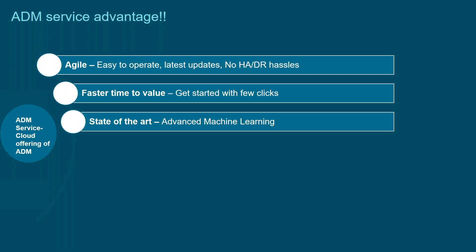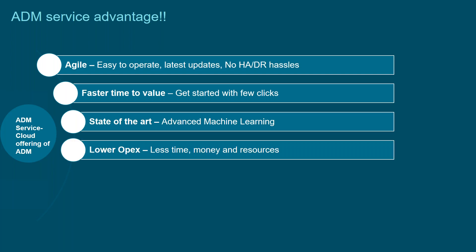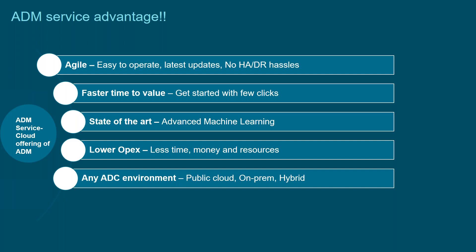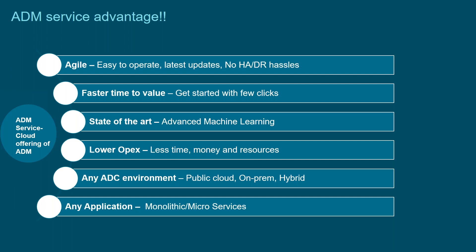ADM Service has a freemium tier called ADM Service Express, which lets you explore the solution without purchasing a license. It supports state-of-the-art advanced machine learning use cases — we've been adding ML-based use cases every quarter. We started with ML-based anomalous server response time detection, then added capabilities around app usage analytics and predicting CPU and memory usage for ADC instances for the next 24 hours. Lower operating expense: no resources or effort spent managing ADM instances. It supports any deployment — public cloud, on-prem, or hybrid — and any applications, whether traditional monolithic or modern microservices-based.